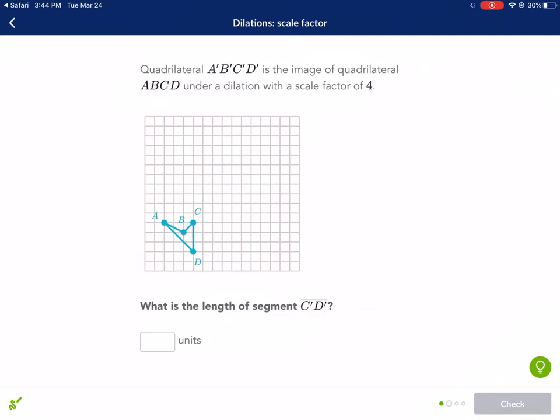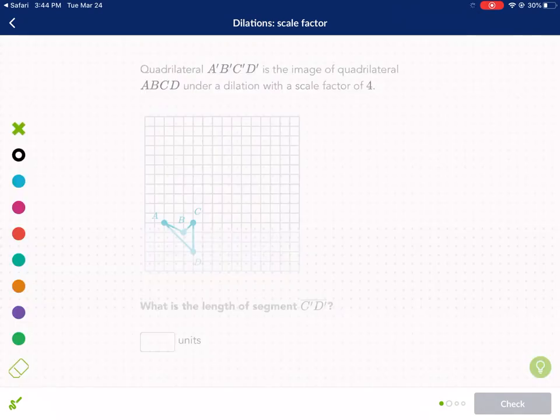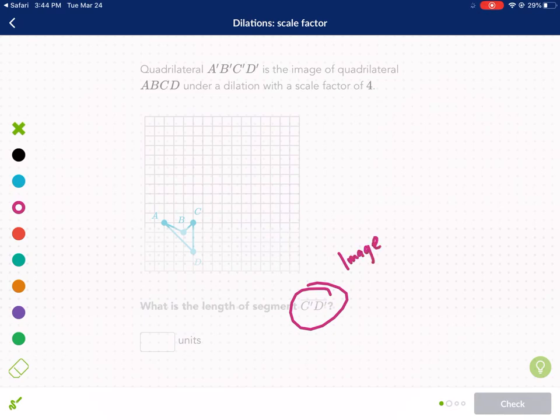Quadrilateral A'B'C'D' is the image of quadrilateral ABCD under a dilation with a scale factor of 4. What is the length of segment C'D'? So now this is the reverse scenario. Now we're asked to find C'D' and that is the image. It gives us the pre-image.